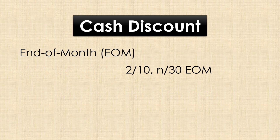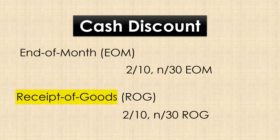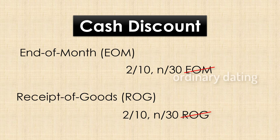Another dating approach is Receipt of Goods or ROG. This approach makes the payment terms effective on the date the goods are received — that is, you start counting from the day after the goods are received. If nothing is appended to the payment terms like EOM and ROG, then the terms apply from the invoice date. And like we saw before, we refer to that as ordinary dating.